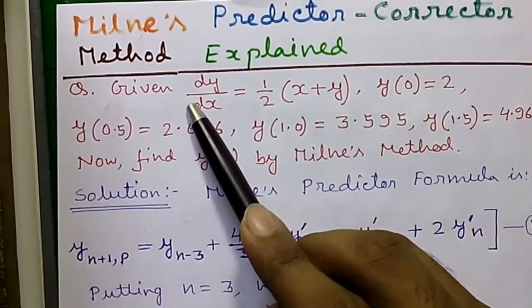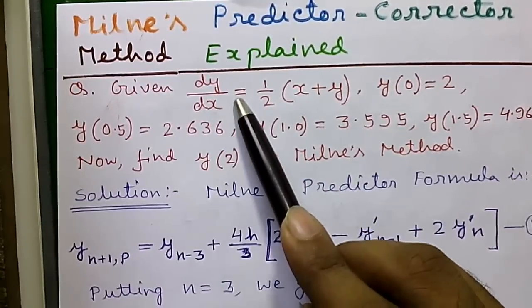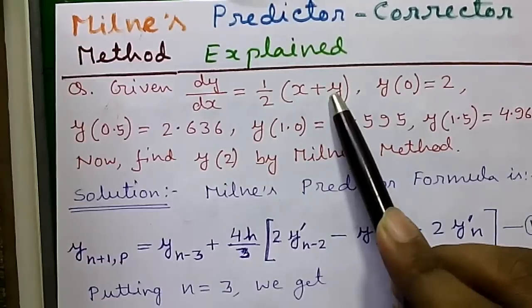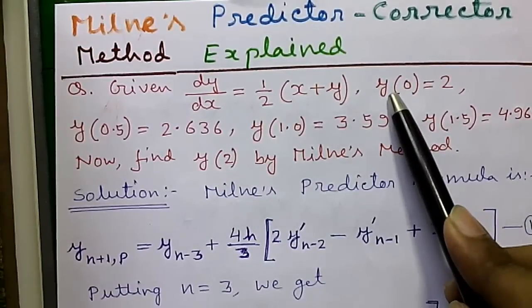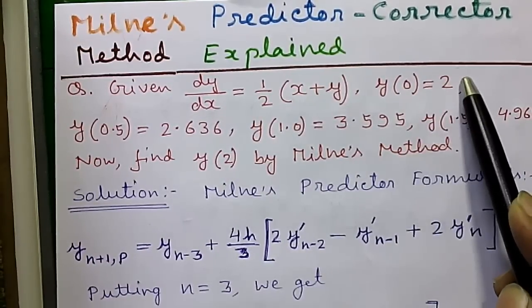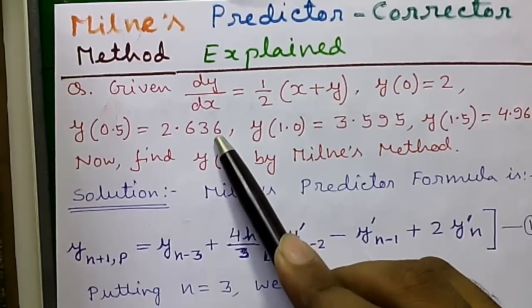Our question is given dy/dx equals 1/2 times (x plus y) where y(0) equals 2, y(0.5) equals 2.636.